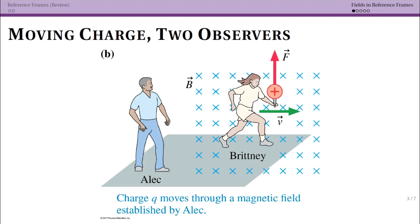Now that we've reviewed a little bit about reference frames, let's apply reference frames to charges. We have two observers with their own reference frames: Alec and Brittany. Alec defines reference frame A, Brittany defines reference frame B. Brittany is running — or think of her on a train. Alec has established a simple uniform magnetic field, like putting the world in a giant solenoid.